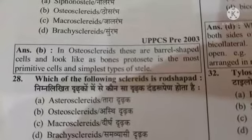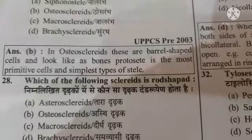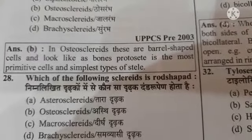Next question: which of the following steles is rod-shaped? Option A sterostele, option B protostele, option C macrostele, option D brachystele. The right answer is option C, macrostele. Next question: if in any vascular bundle phloem surrounds the xylem, it is termed as option A amphibasal, option B radial, option C conjoint, option D amphicribal. The right answer is option D, amphicribal.